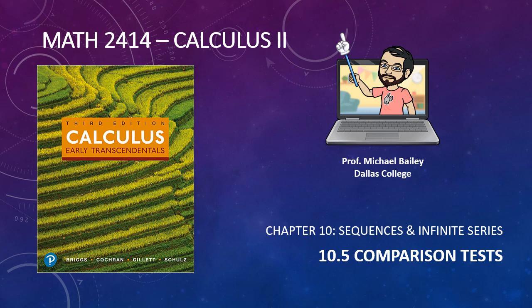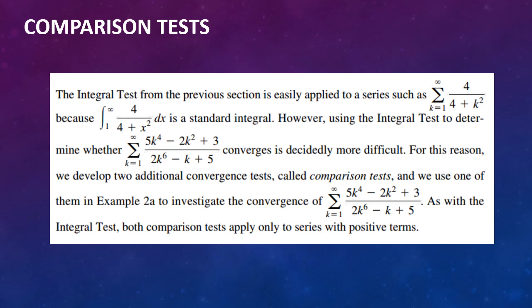We're going to begin our next section, Chapter 10, specifically 10.5, Comparison Tests. This continues on from what we did in the last chapter, 10.4, about divergence tests. The integral test from the previous section is easily applied to a series such as the summation from k equals 1 to infinity of 4 over 4 plus k squared, because the integral from 1 to infinity of 4 over 4 plus x squared dx is a standard integral.